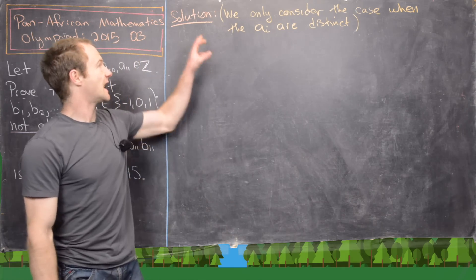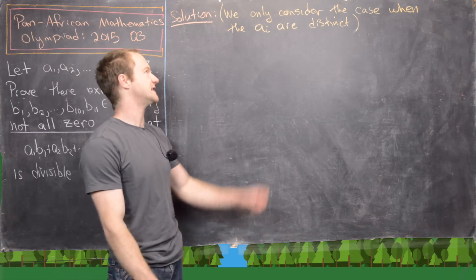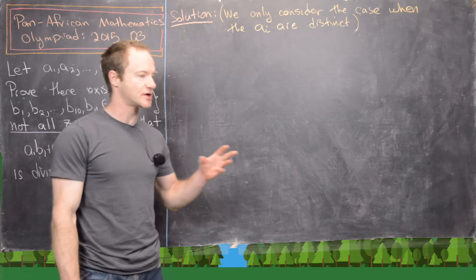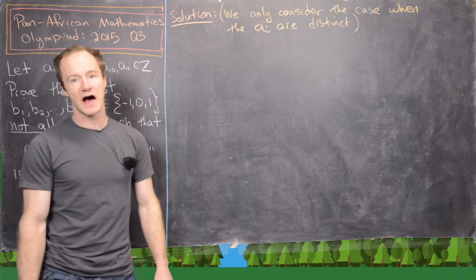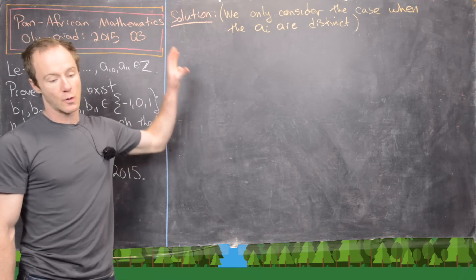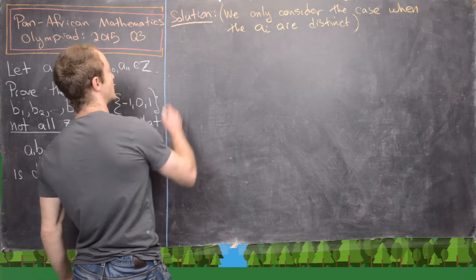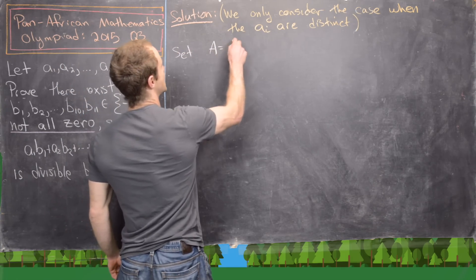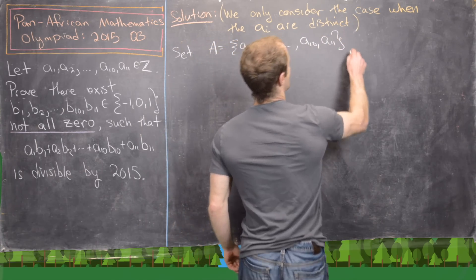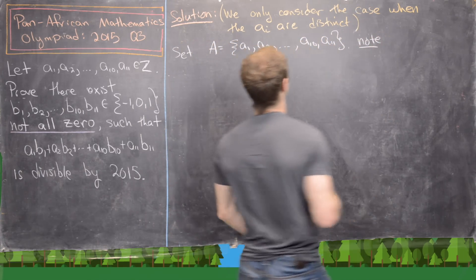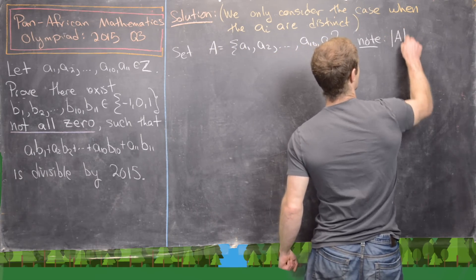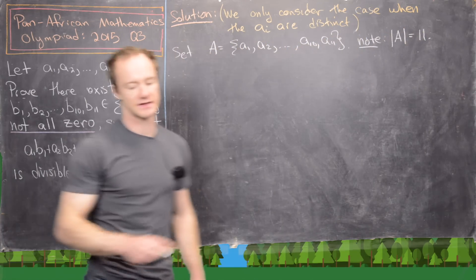Now we're ready for our solution. I want to point out that we are only going to consider the case when all of the A_i are distinct. Obviously, when writing up a very careful solution, you would also need to consider the case when the A_i are not distinct — maybe post that solution in the comments. So we're only going to consider that case. We set A equal to the set {A1, A2, ..., A11}, and because we've only considered the case when the A_i are distinct, we know A has exactly 11 elements.